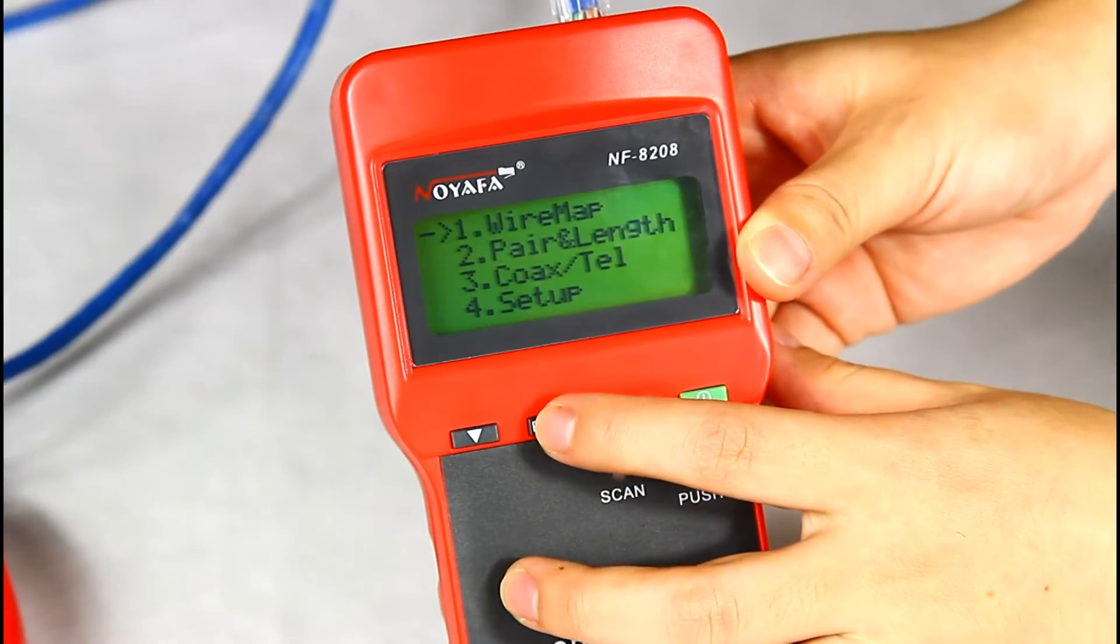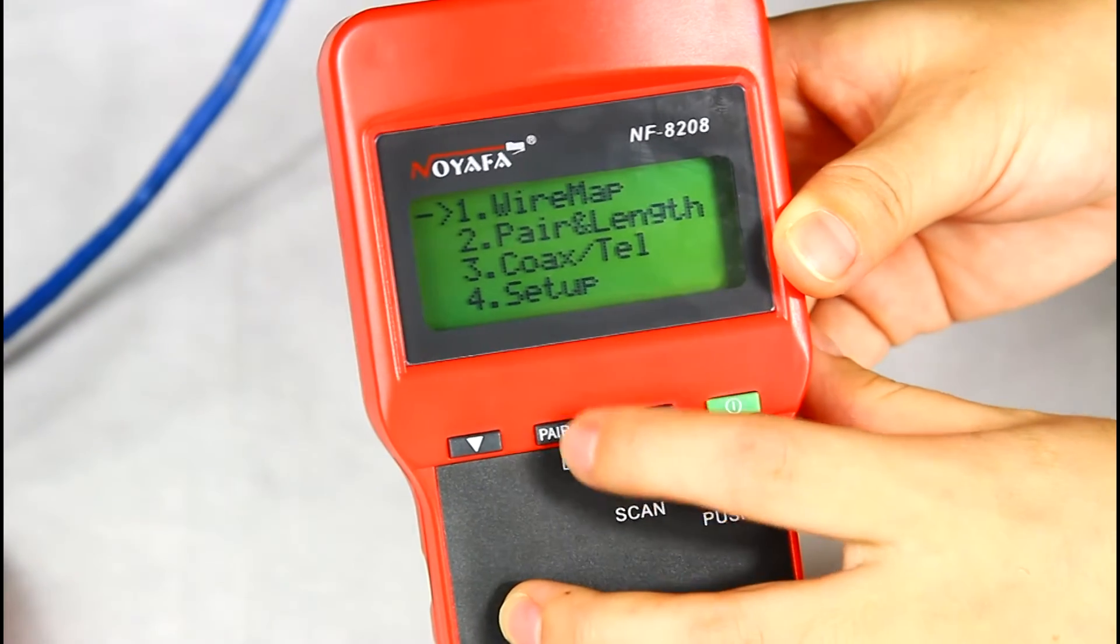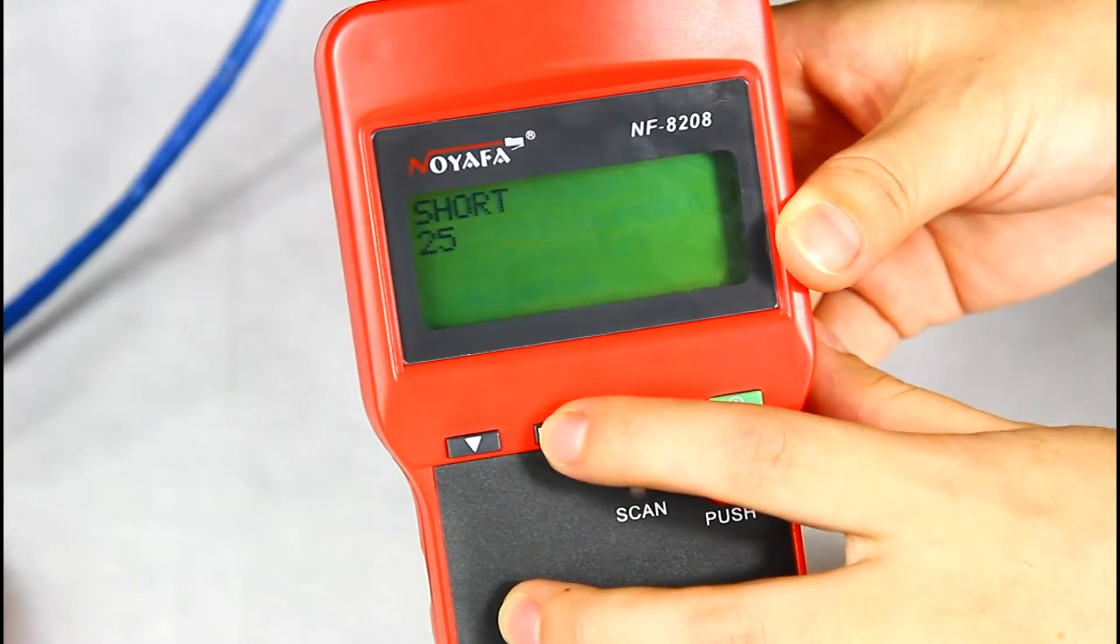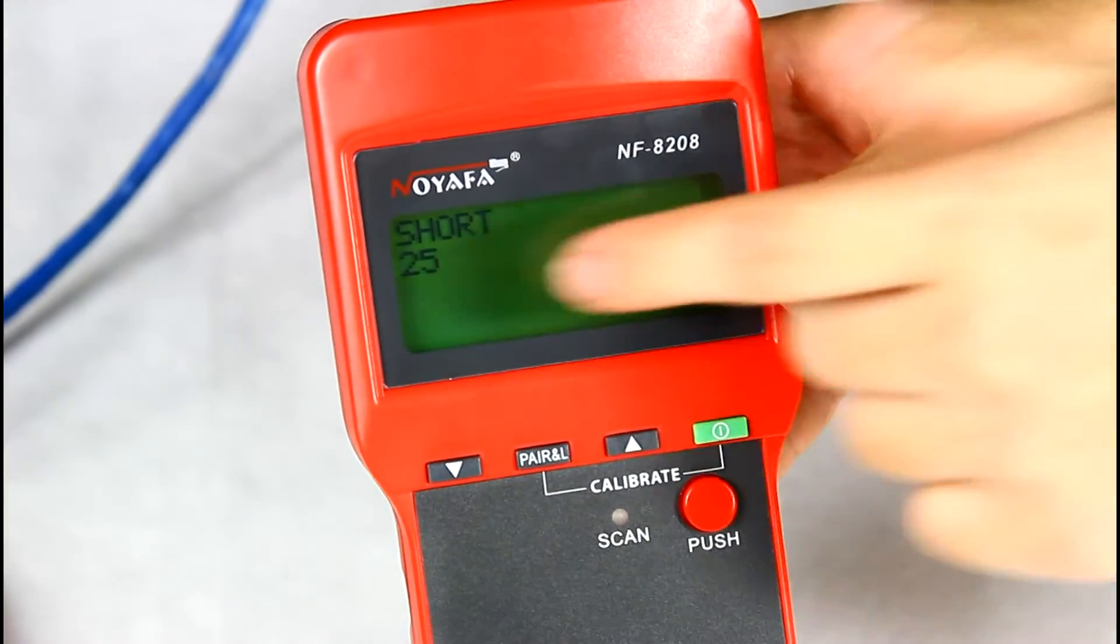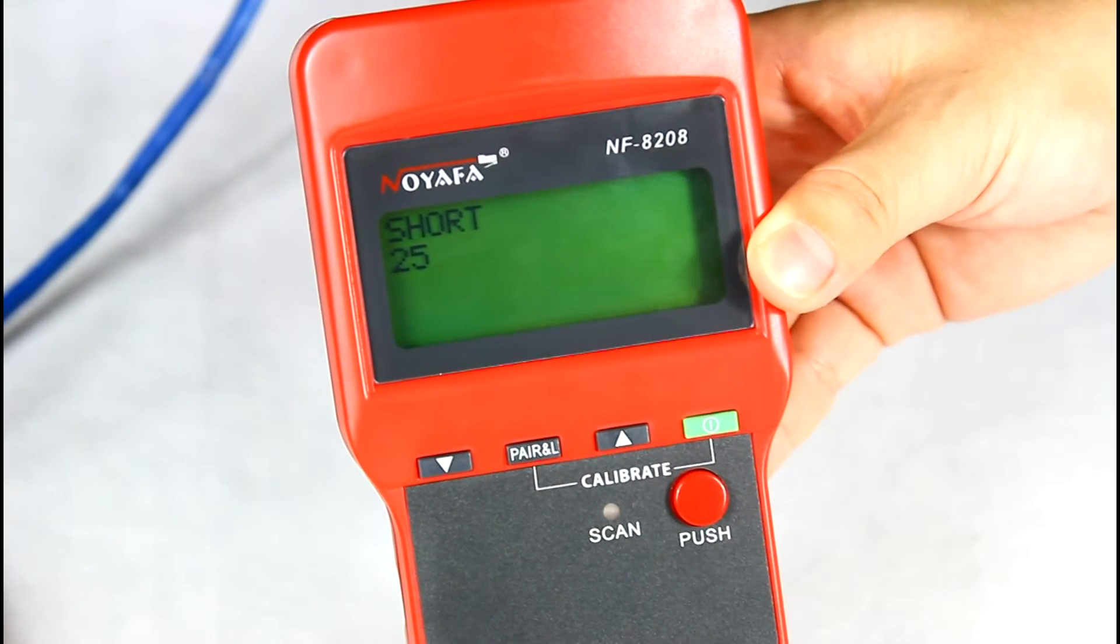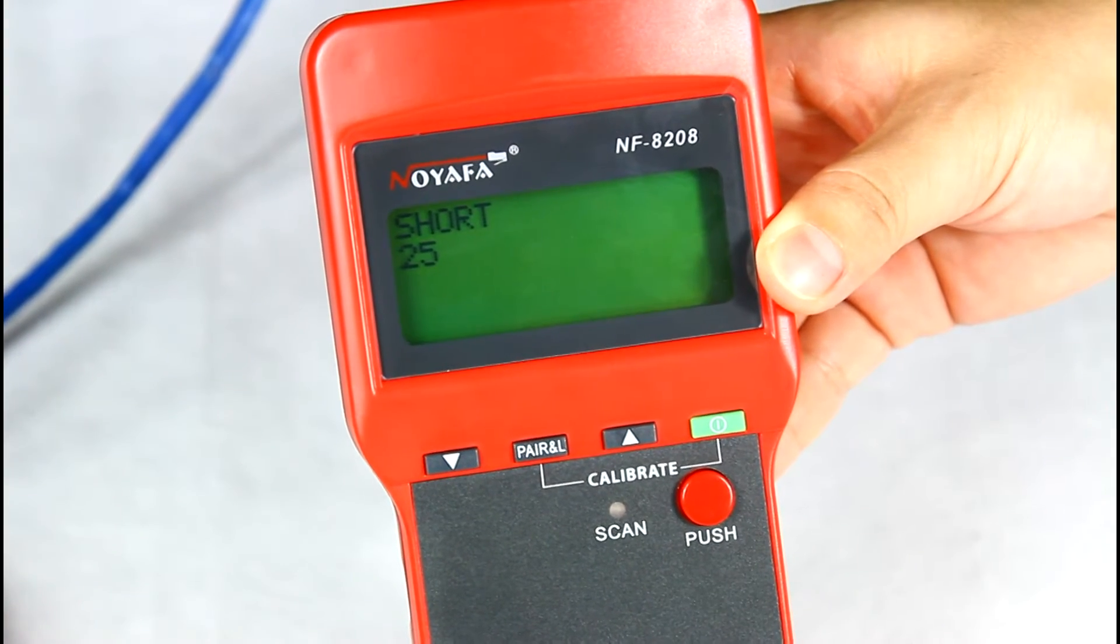Choose the wiring menu and push the power and length button. You can see the result short from the LCD screen.